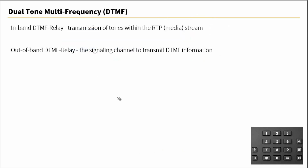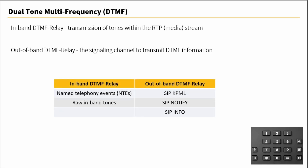We have in-band DTMF relay, where DTMF tones are transmitted within the RTP stream. Then we have out-of-band DTMF relay, where the signaling channel is used to transmit DTMF. Throughout this skill, we'll look at different DTMF relay methods. For in-band, we have named telephony events or raw in-band tones. For out-of-band, we have SIP KPML — key press markup language — as well as SIP Notify and SIP Info. We'll start by discussing named telephony events in the following video.